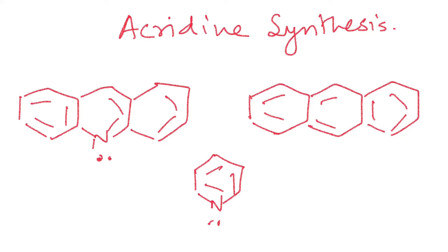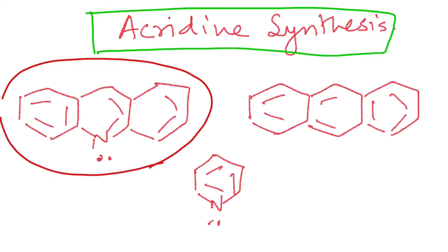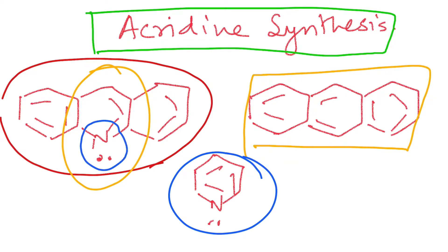Today we shall discuss a topic related to heterocyclic chemistry: acridine synthesis. Acridine is a molecule where one pyridine nucleus is in between two benzene rings. You may compare it as a combination of anthracene and pyridine. This molecule shows properties like pyridine, or you can say the half part is also quinoline-type.